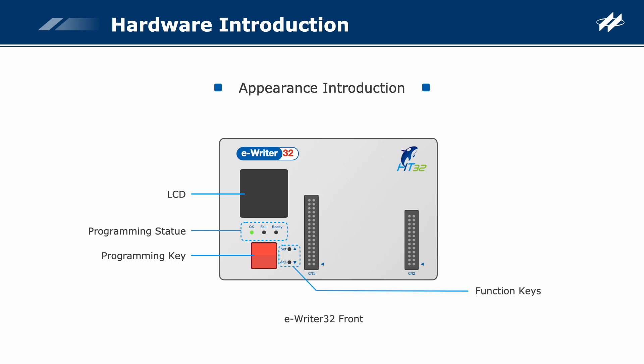Function keys: there are two keys, SET and ADJ, for switching LCD information pages or setting functions. Using these two keys, users can switch LCD information pages. Programming adapter interface — programming signal pins. The eSocket32 is a writer used with the eWriter32. Refer to the Holtec website to select an eSocket32 for the specific MCU in a certain package type.